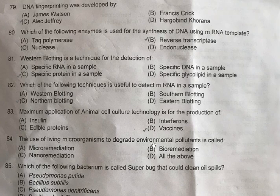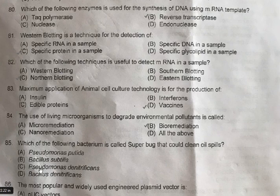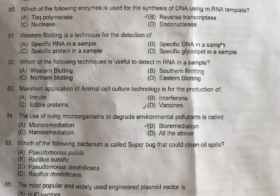Question 84: The use of living organisms to degrade environmental pollutants is called — A: Microremediation, B: Bioremediation, C: Nanoremediation, D: All of the above. Option B, Bioremediation, is correct. Question 85: Which bacterium is called the superbug that could clean oil spills? — A: Pseudomonas putida, B: Bacillus subtilis, C: Pseudomonas denitrificans, D: Bacillus denitrificans. The correct one is A, Pseudomonas putida. It was used by microbiologist Dr. Anand Mohan Chakrabarty and is also called oil-eating bacteria.